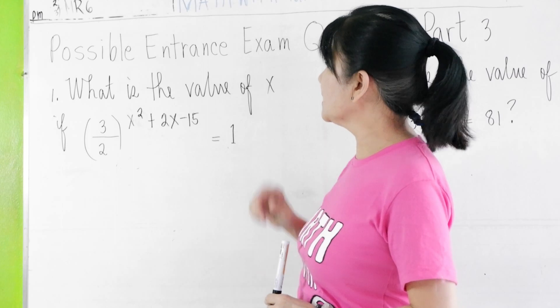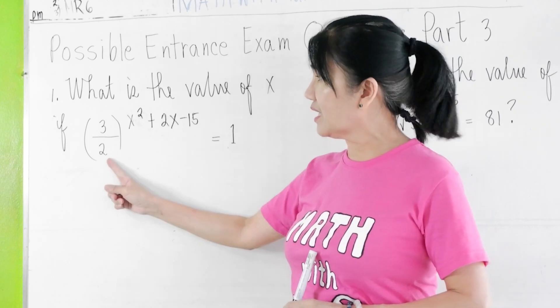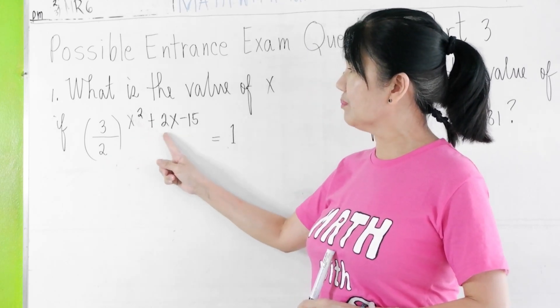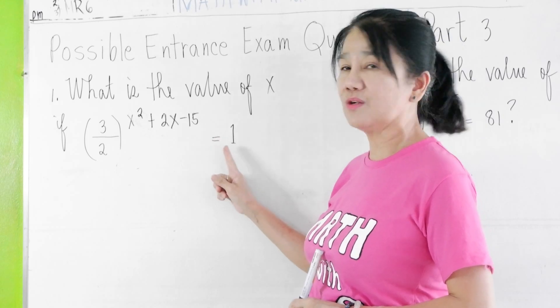Question number one. What is the value of x if (3/2)^(x² + 2x - 15) = 1?